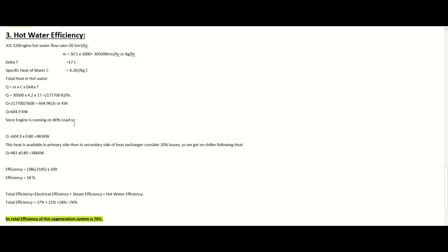Since the engine is running at 80 percent load, we get heat according to 80 percent, which is 483 kilowatts. This heat is available on the primary side of the jacket water. To extract this heat we install a heat exchanger; due to heat exchanger losses of about 20 percent, we get 386 kilowatts on the secondary side. So the output in case of hot water is 386 kilowatts. The input is the same as in previous cases — the kilowatts of gas supplied to the gas engine (2,105 kW). Dividing output by input: 386 ÷ 2,105 = 18 percent efficiency.